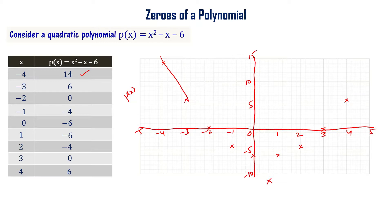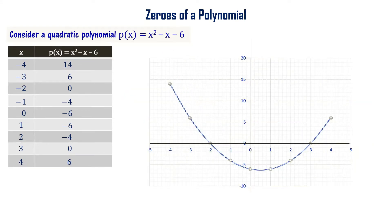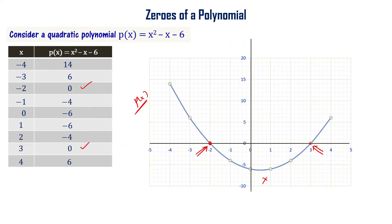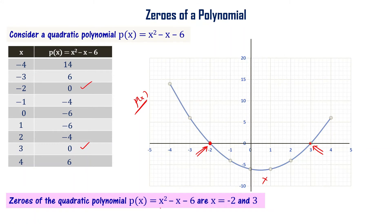Connect the dots freehand. This is the graphical representation of the given polynomial p(x). You can see that at x = minus 2 and x = 3, the value of the polynomial is 0 — meaning the graph crosses the x-axis. Those x-values where the polynomial value is 0 are the zeros of the given polynomial. So minus 2 and 3 are the zeros of p(x) = x² minus x minus 6.